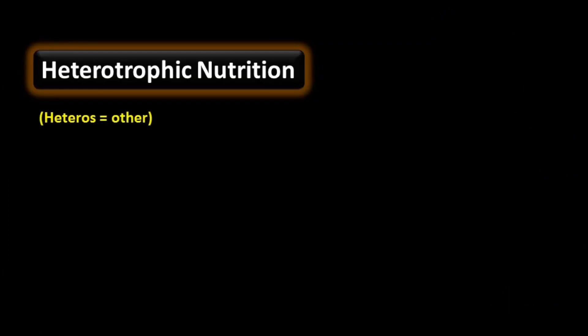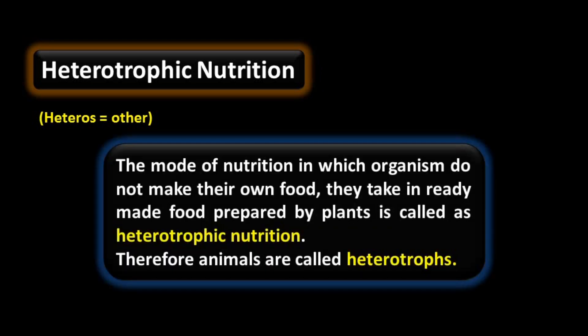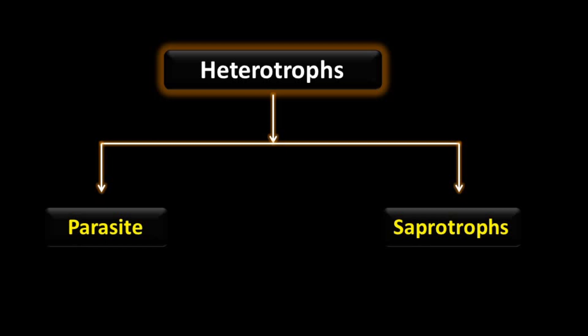Heterotrophic nutrition — 'heteros' means other, depending upon another organism to obtain food. The mode of nutrition in which organisms do not make their own food but take in ready-made food prepared by plants is called heterotrophic nutrition. Animals depend upon other organisms to obtain their food, so animals are called heterotrophs. Heterotrophs are classified into two types: parasites and saprotrophs.